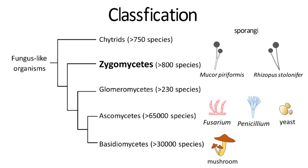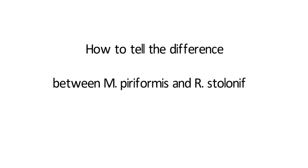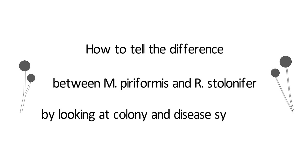Since Mucor and Rhizopus are in the same group, they have the same structures such as sporangia and sporangiophores, which makes it difficult to tell the difference between these two species. In this video, you will learn how to tell the difference between Mucor piliformis and Rhizopus stolonifer just by looking at their colony morphology or disease symptom.